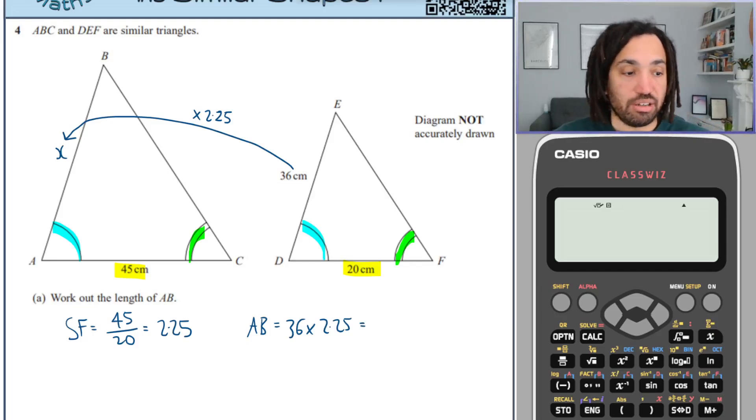So we do that on our calculator, 36 multiplied by 2.25, and we get 81. Lovely.